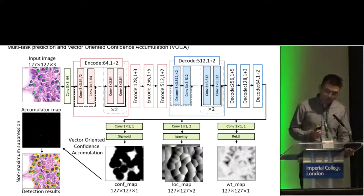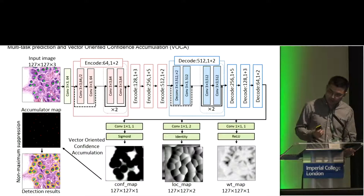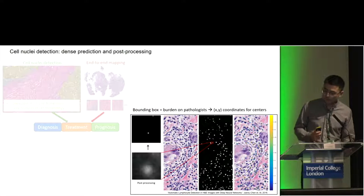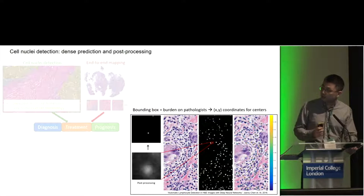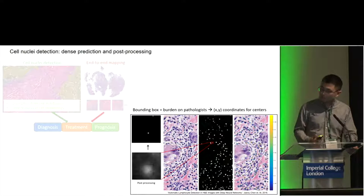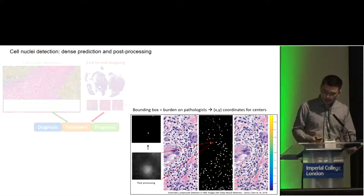Our method tries to solve two problems with previous methods. One is that non-maximum suppression takes a lot of time on this kind of dense prediction, which is essentially pixel-wise probability regression. The other problem is that sometimes when cells are too close to each other, the peaks tend to merge together.